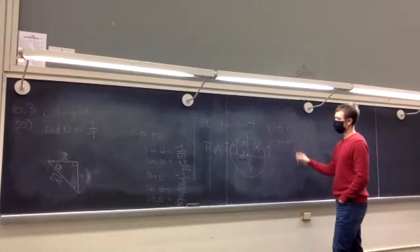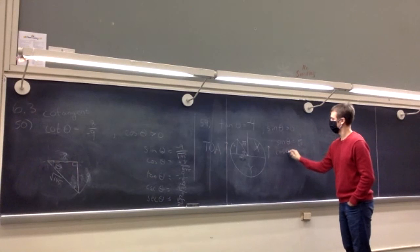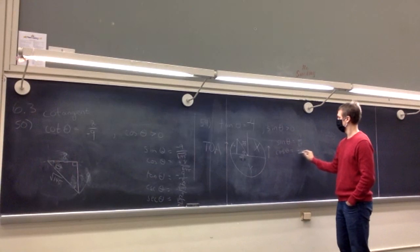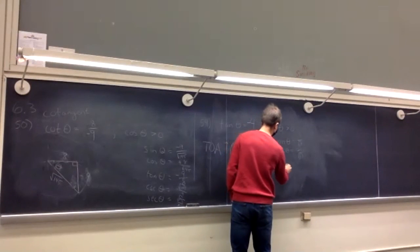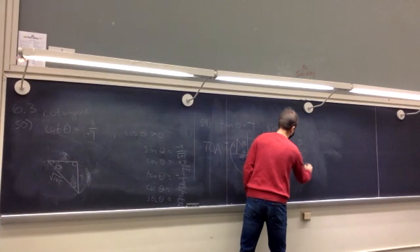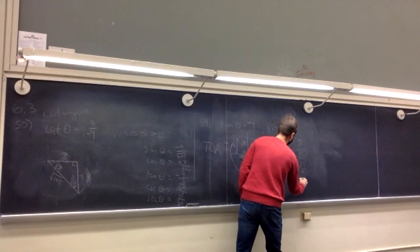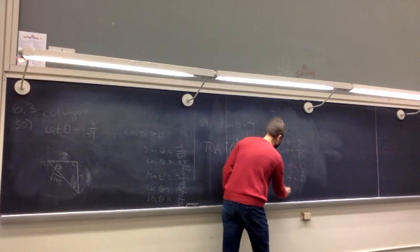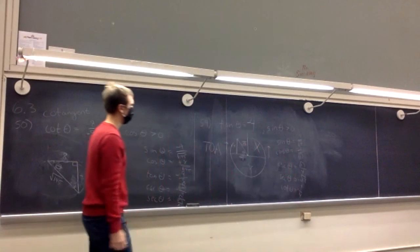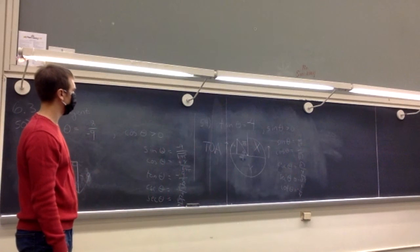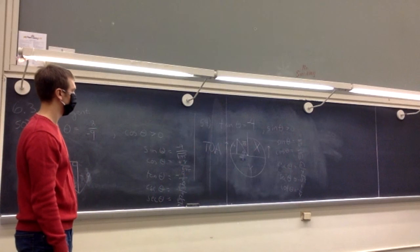Sine of our angle is opposite over hypotenuse. Cosine is adjacent over hypotenuse. Going slowly and not rushing, we can find all six trig function values correctly.